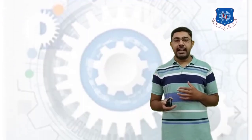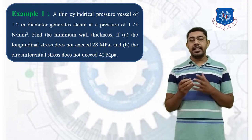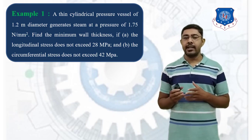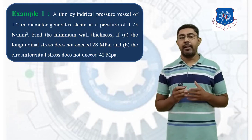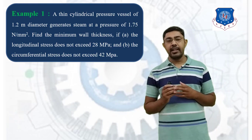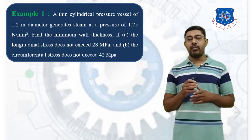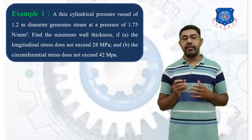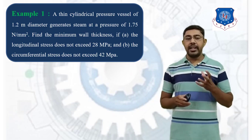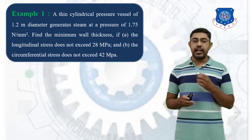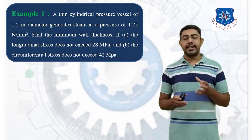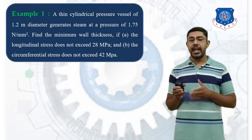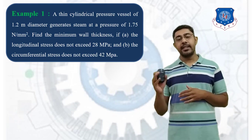Let's consider the first example: a thin cylindrical pressure vessel of 1.2 meter diameter generates steam at a pressure of 1.75 Newton per mm square. The diameter of the pressure vessel is 1.2 meters and the pressure inside is 1.75 Newton per mm square. We have to find the minimum wall thickness.